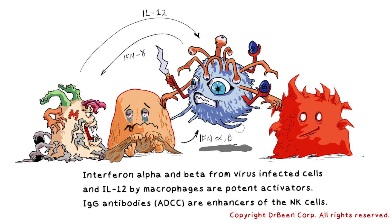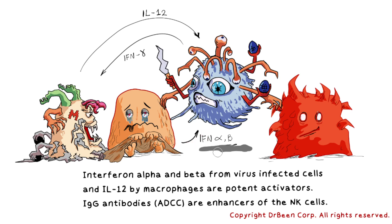While all this is happening, certain things can augment the NK cell's function. Macrophages release interleukin-12, which potently activates NK cells. Similarly, sick cells release interferon alpha and beta, which are also potent activators of NK cells. Imagine you are an NK cell — you go near a sick cell. If you touch it and see that MHC1 is missing or reduced, you become alerted. At the same time, the cell is releasing interferon alpha and beta, which also signal that the cell is sick, and you become active. In addition, NK cells also have receptors for immunoglobulin G antibodies.